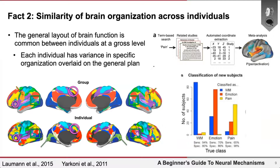We also know from meta-analyses that we can combine data across people to get insights into localization of function. Tal Yarkoni's Neurosynth project developed a tool to automatically extract activation coordinates from about 14,000 fMRI papers. Combining that data, we built a decoder that can take data from new individuals — some doing a working memory task, some involving emotion, some involving pain — and classify which task they were doing. This only works because there's a general functional plan that's fairly consistent across people.